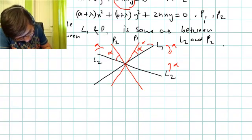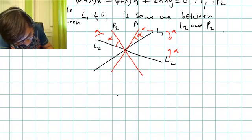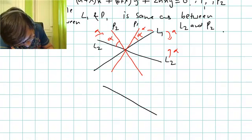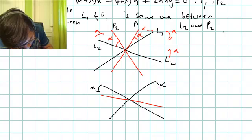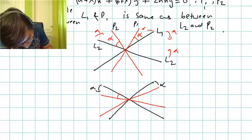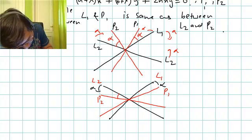Another way this can happen is I draw a pair of lines and shift alpha outward on both sides. So my another pair can be like this. Again, this is your l1, l2 and the new lines are p1, p2, and again the condition is true — this angle is alpha and this angle is alpha.